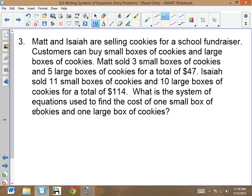Okay, now we're going to write an equation. So let's find our totals. Matt and Isaiah are selling cookies for school. You can buy small boxes or large boxes. Matt sold three small boxes and five large boxes. What's his total? What's his total cash? $47.